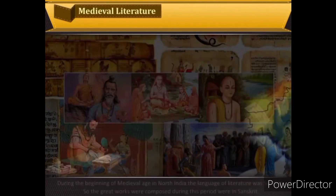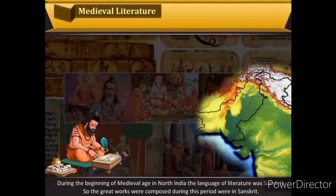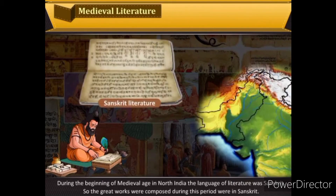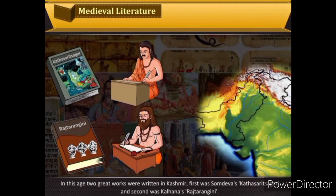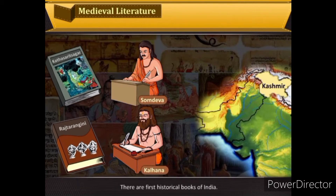During the beginning of the medieval age in north India, the language of literature was Sanskrit, so great works were composed in Sanskrit. In this age, two great works were written in Kashmir: Somadeva's Kathasaritsagara and Kalhana's Rajatarangini. These are considered the first historical books of India.